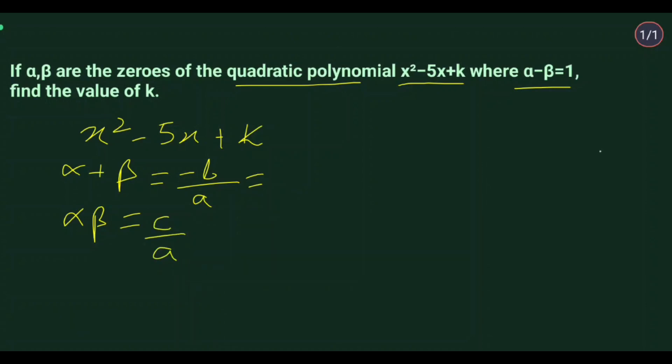The sum is -b/a. Here b is -5, so minus times minus 5 gives you 5. And a is 1, so α + β = 5. For the product, αβ = c/a, where c is k and a is 1, so αβ = k. Now we have the sum and product.